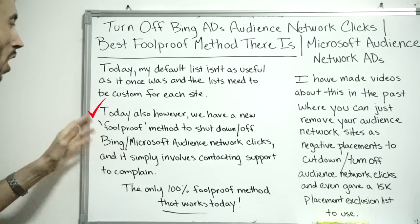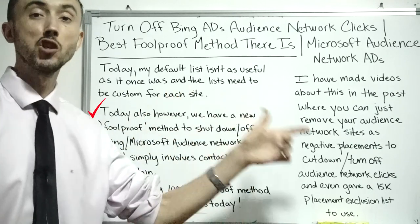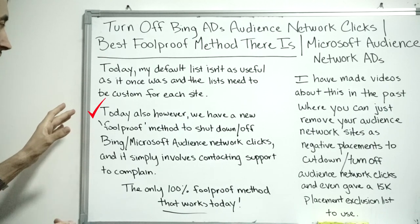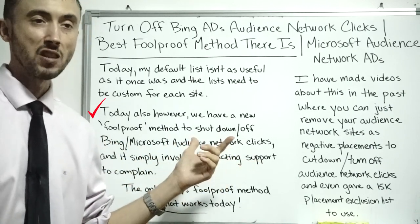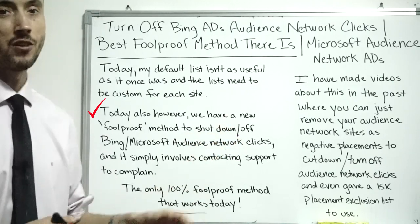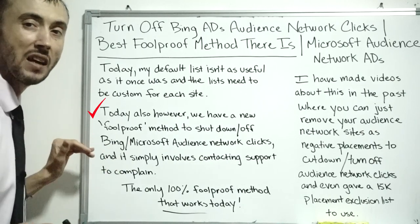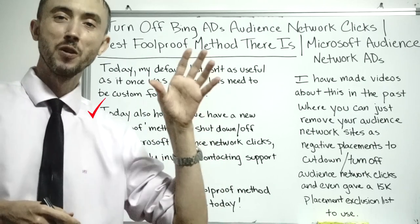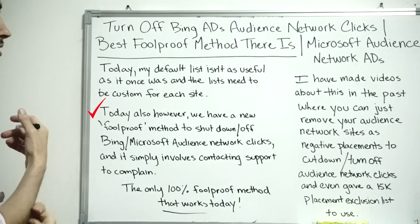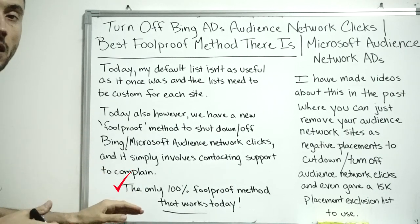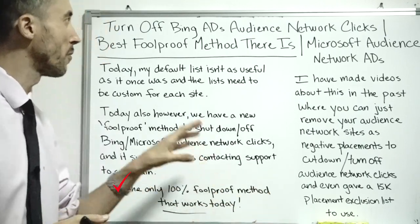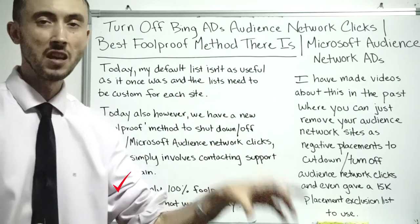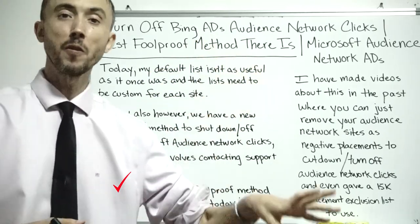So because the exclusion list won't fully work, you need another workaround. We have found that if you contact Bing support directly, you can get them to actually shut off audience network clicks. I wish I knew about this earlier, but it is what it is. It's not as simple as just saying 'please shut off audience network clicks' and them doing it right away — but it is possible to get them to do it.